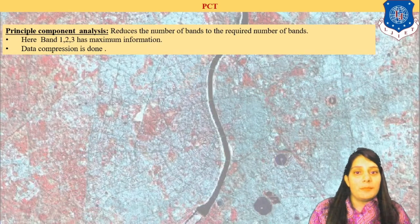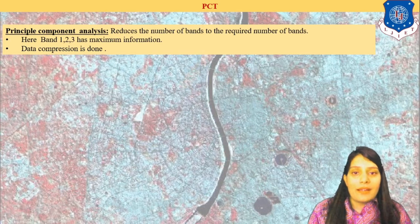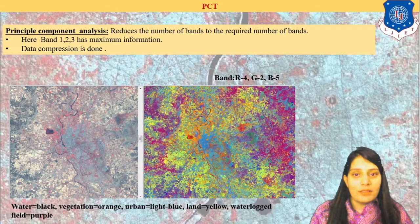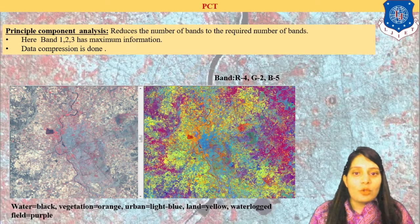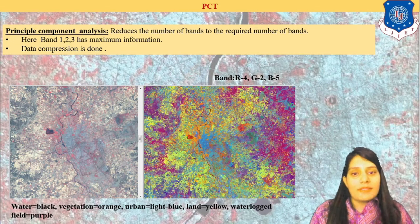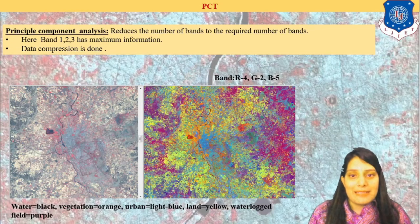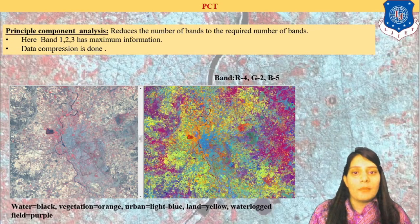PCT — Principal Component Transformation — compresses the required number of bands and the information is compressed into bands 1, 2, and 3. The left side image is the raw image and the right side has PCT applied. The classes are classified: you can see water body in black and land in other colors. The software itself minimizes the data, compresses the number of bands, and you get the data in the required number only.